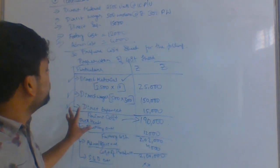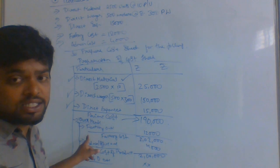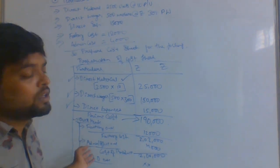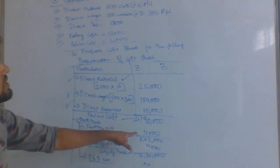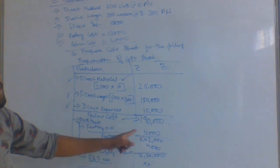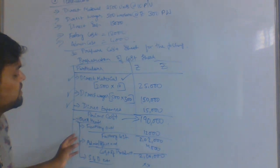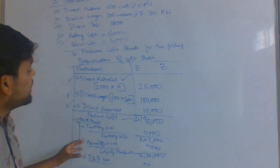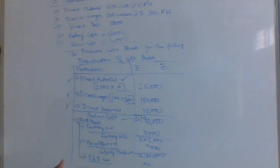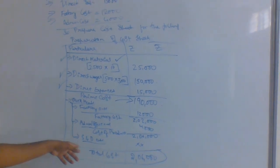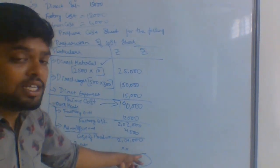Once you get the prime cost — which means main cost or primary cost — the second step is overheads, which means indirect cost. The first indirect cost is factory overhead, whatever expenses are incurred in the factory. Here they are given factory cost as 12,000. If you add that you will get factory cost. The second one is office cost — 4,000. If you add that, we will get cost of production. There is no selling and distribution overheads, so that is 2,06,000 as our total cost.